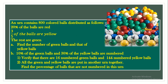Another question, very important for official exams. An urn contains 800 colored balls distributed as follows: 20% of the balls are red, 3/5 of the balls are yellow, and the rest are green. Find the number of green balls and yellow balls. First, to find the number of green balls, we need to use the total number of 800 balls, which represents 100%. So 100% gives us 800 balls.